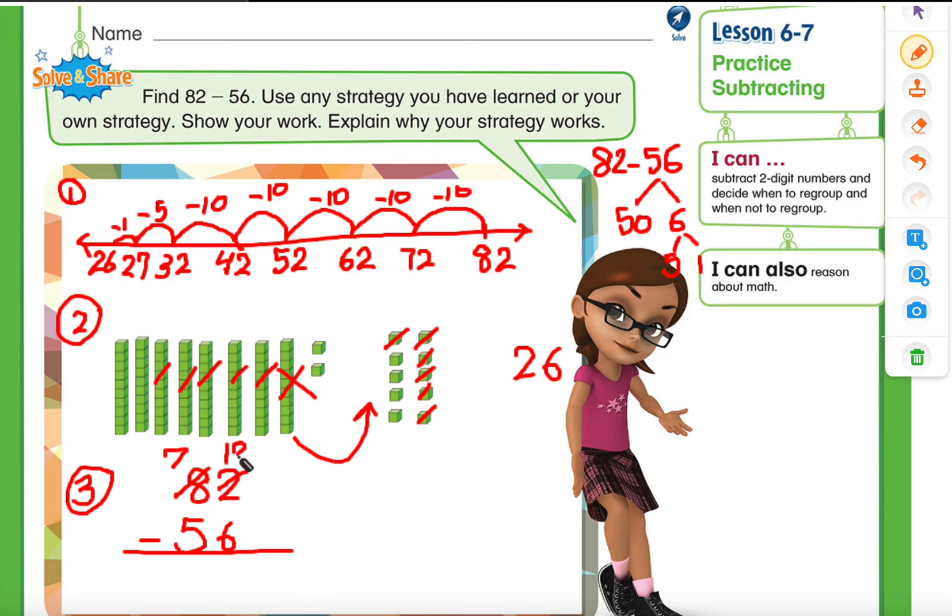So that's why I need to go to my tens column and get 10 more. So when I got the tens from here, this number changed to 7 and this number became 12. 12 take away 6 is 6. 7 minus 5 is 2. So our difference is 26.